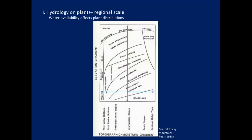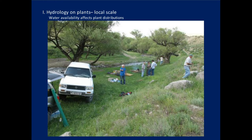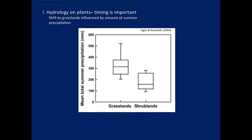At a regional scale, from mountaintops to valleys — the theme of this conference — as you go up in elevation you get changes in vegetation. This is data for the central Rocky Mountains along the Front Range of Colorado. On the plains you have grasslands; as you go up the mountain you get different types of conifer forests. Moving across a moisture gradient from wet to dry areas, you again get those vegetation changes. At a very local scale you can get changes in riparian areas versus upland areas. We know the hydrologic cycle affects vegetation structure and function very well.